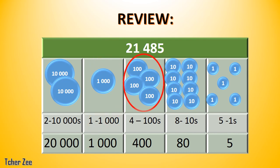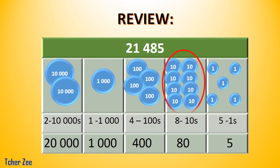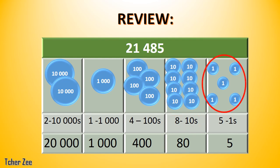And 4 discs of 100, or 4 hundreds. Its value is 400. And 8 discs of 10, or 8 tens. Its value is 80. And 5 discs of 1, or 5 ones. Its value is 5. Very good!